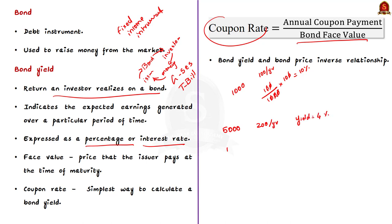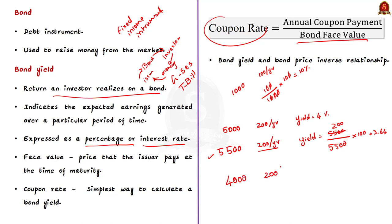Now consider the other scenario: suppose the price of the bond decreases from rupees 5000 to rupees 4000 due to lack of investor demand, trading at 20 percent below the issue price. The coupon amount remains the same at rupees 200, and the bond yield changes to 5 percent. So when the price of the bond goes up, the yield decreases; when the price comes down, the yield increases.